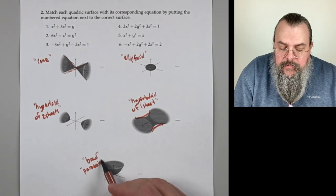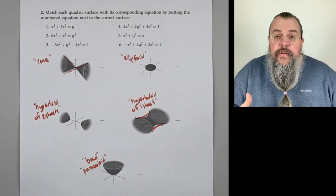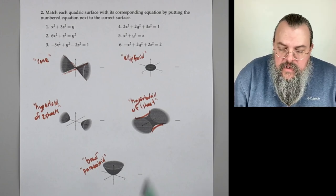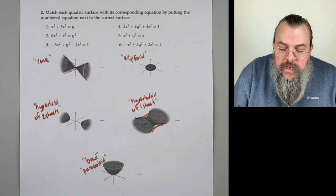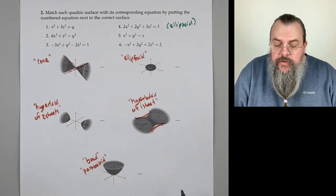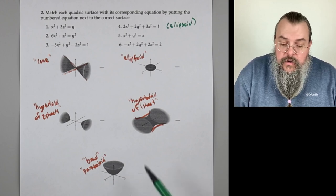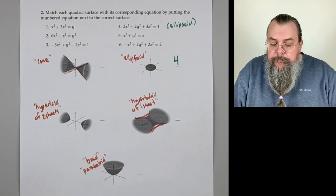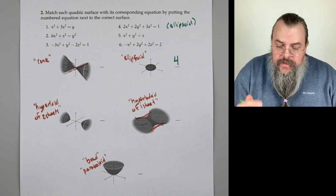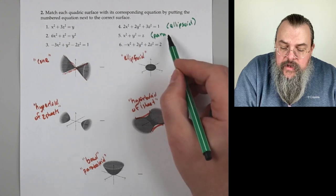Now, how do we go about doing this? It helps to be familiar with the equations. An ellipsoid looks like (something)x² + (something)y² + (something)z² = 1, where all coefficients are positive. We check — that's equation 4. For a paraboloid, two variables are squared and the third is not. We do have paraboloids: this one has x² and y² and just z. So that's one match.